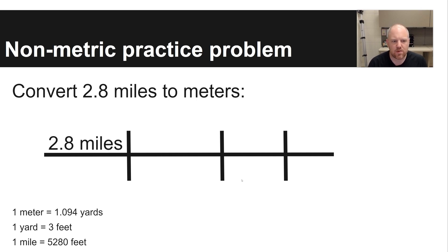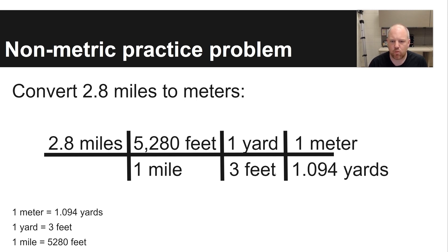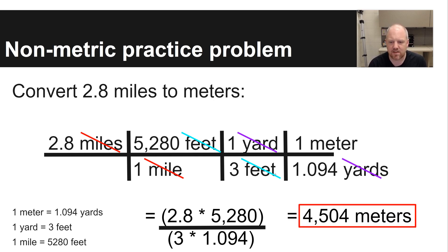You always start in the top left corner with the units you begin with — 2.8 miles. Then use the conversion factors to get from miles to meters: there are 5,280 feet in one mile, so miles cancel out; there are 3 feet in one yard, so feet cancel out; and 1 meter equals 1.094 yards, so yards cancel out. The only unit remaining is meters. You multiply all values on the numerator, multiply all values on the denominator, and divide to get 4,504 meters.